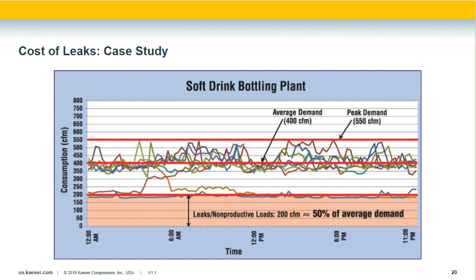In a case study, a soft drink bottling plant was losing about 200 CFM to leaks and nonproductive demands — nights, weekends, and off-shift — resulting in $34,000 per year of wasted energy. This data quantifies the leak rate for the customer and provides real impetus to conduct a leak study, showing the power of a compressed air audit.